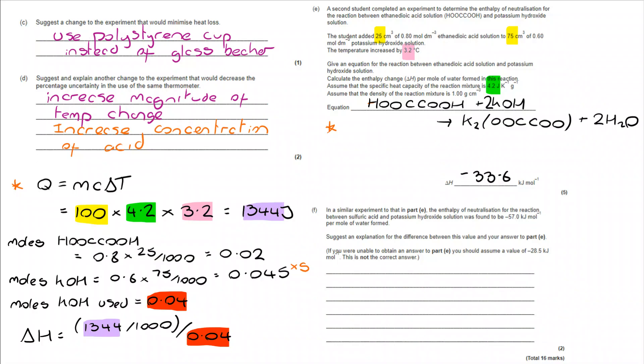Let's now move on to part F. Similar experiment. Enthalpy of neutralisation was found to be negative 57. Suggest an explanation for the difference between this and the answer that you've just got in part E. So negative 33.6. Well, ethendoic acid is a weak acid. Sulfuric acid is a strong acid. So we're now relying on some knowledge of strong and weak acids.